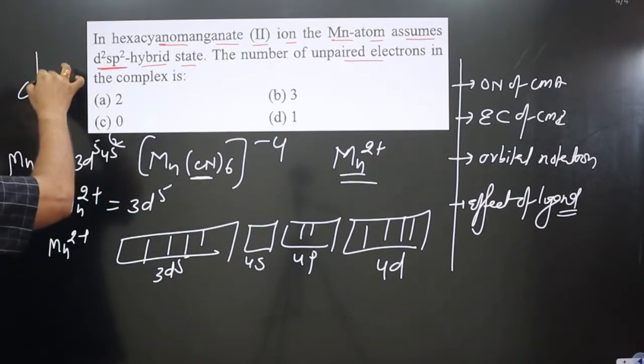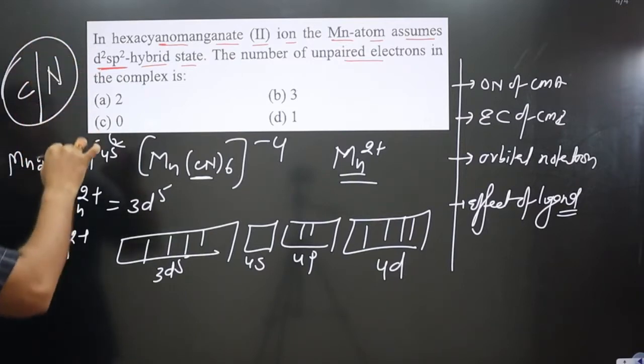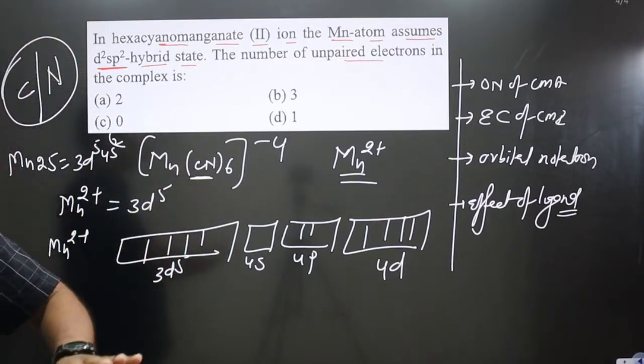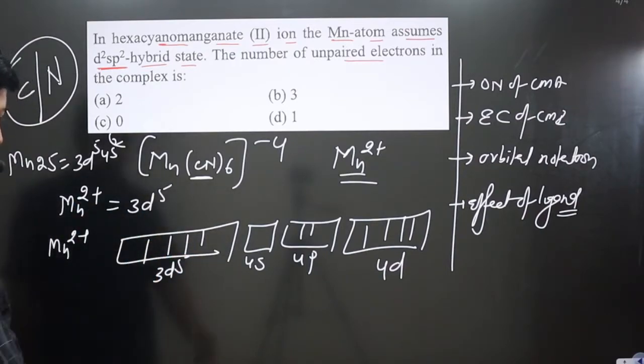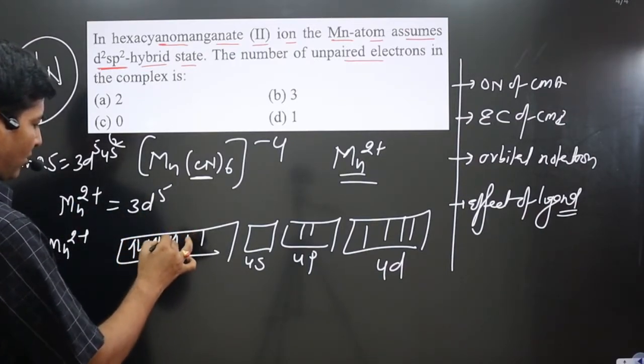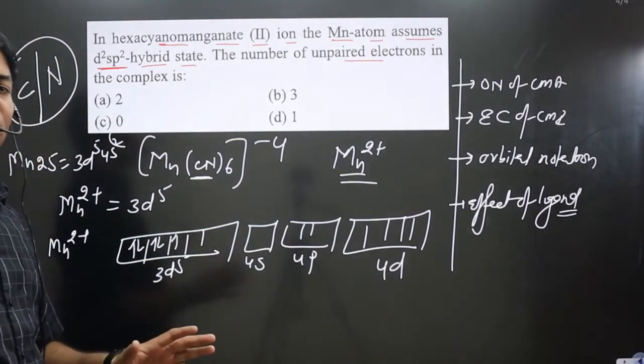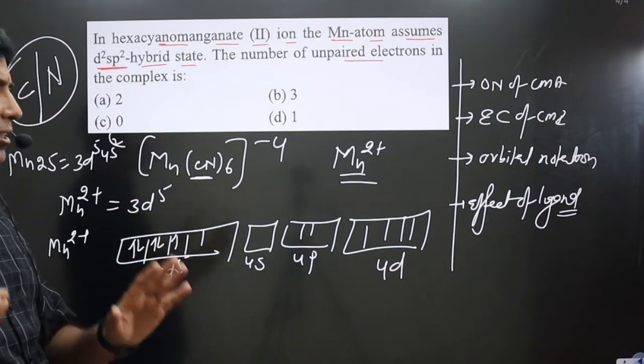In general, ligands starting from carbon and nitrogen are considered strong field ligands. We have a strong field ligand, which means pairing of electrons will be taking place. We do not follow Hund's rule: five electrons are filled—1, 2, 3, 4, 5.